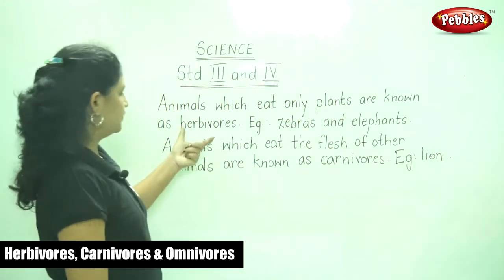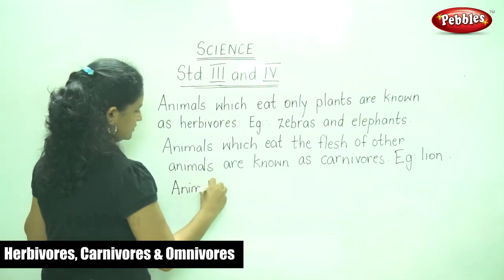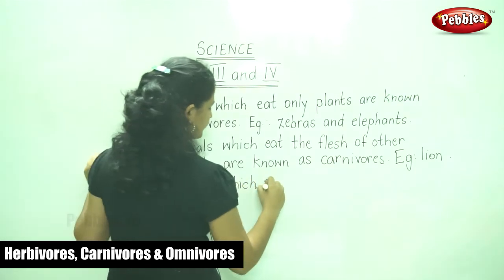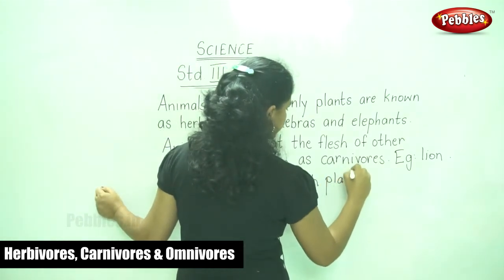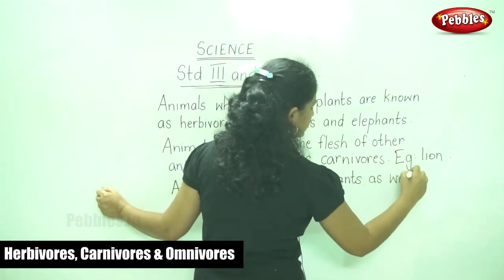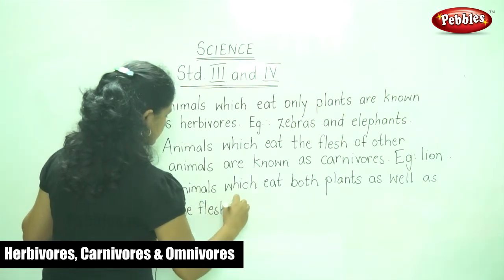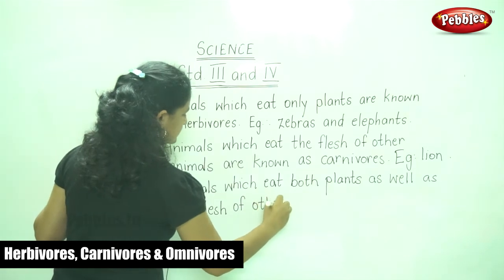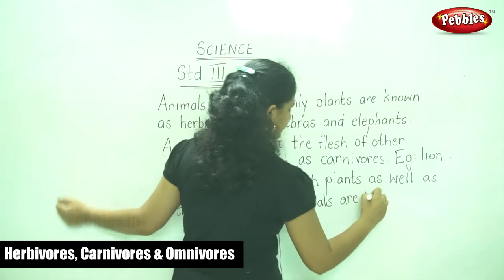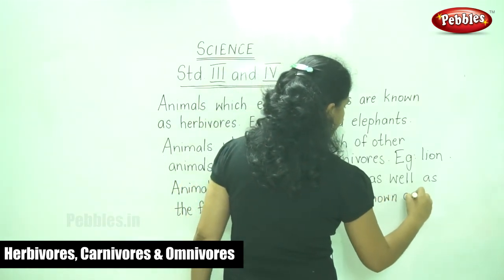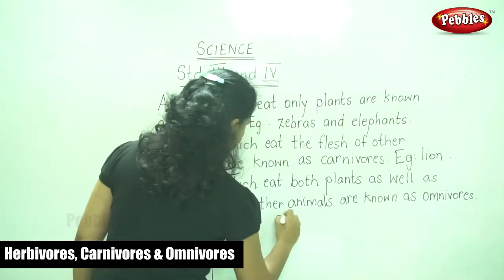So we have herbivores, carnivores, and animals which eat both plants as well as the flesh of other animals are known as omnivores. Example: crow.